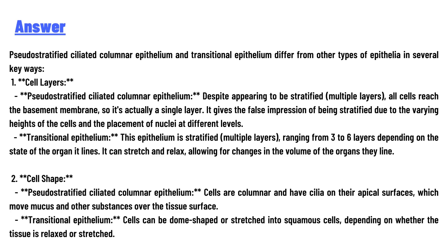Pseudostratified ciliated columnar epithelium and transitional epithelium differ from other types of epithelium in several key ways. First, cell layers: pseudostratified ciliated columnar epithelium, despite appearing to be stratified, has all cells reaching the basement membrane, so it is actually a single layer. It gives the false impression of being stratified due to the varying heights of the cells and the placement of nuclei at different levels.